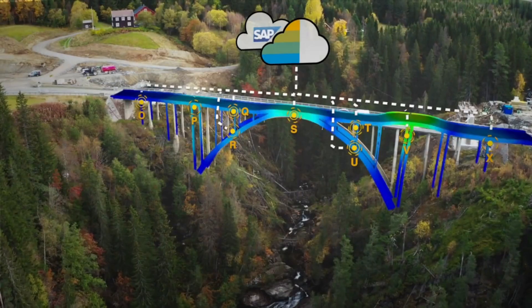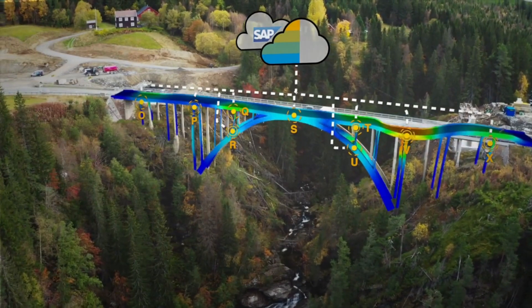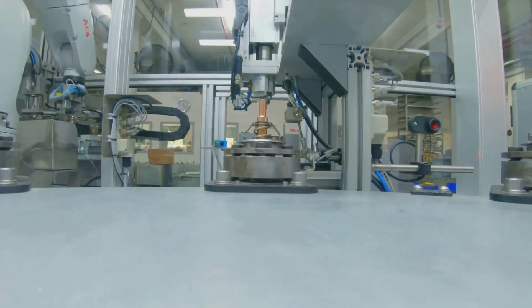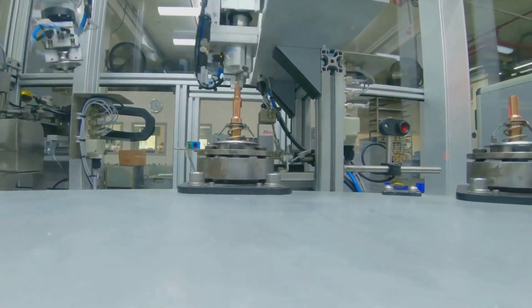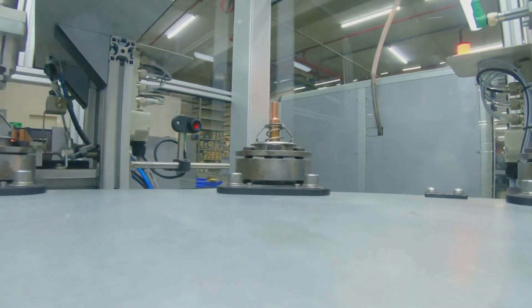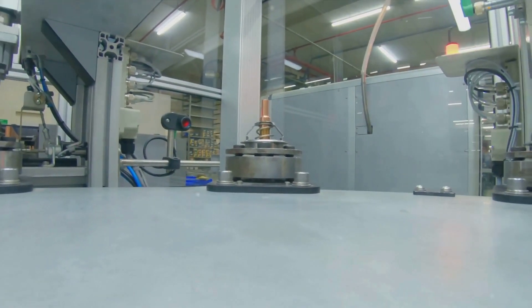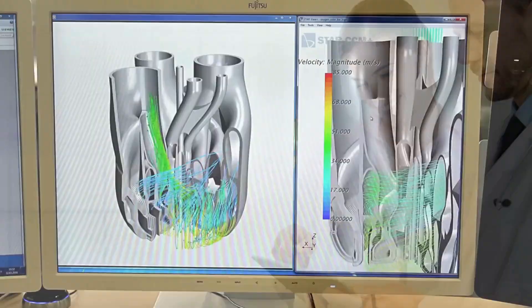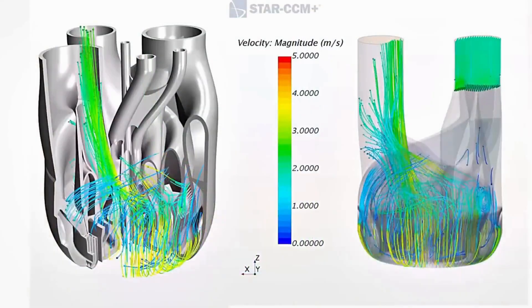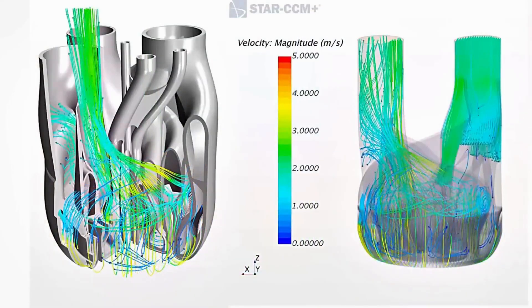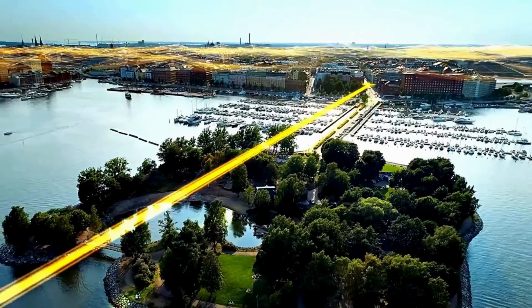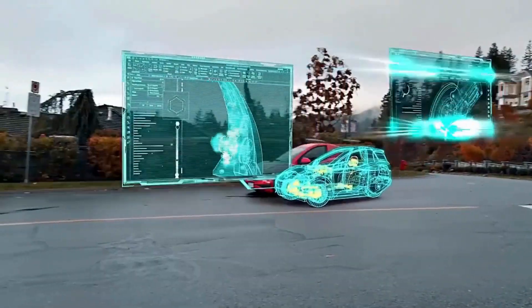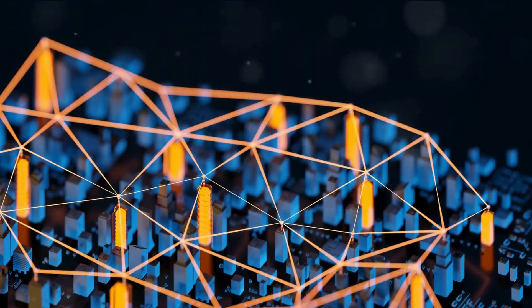Digital twins are used across various sectors. In manufacturing, they optimize production lines and predict maintenance needs. In healthcare, they simulate medical treatments for personalized medicine. And in cities, they help manage everything from traffic to energy use.